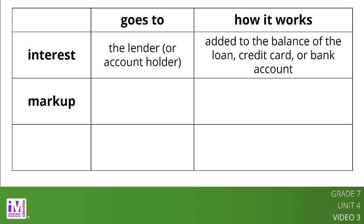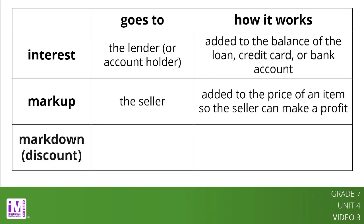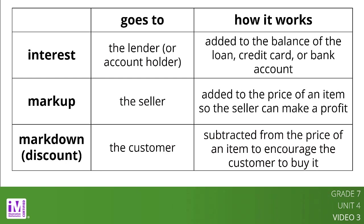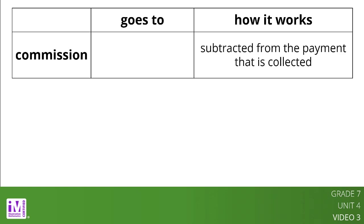A markup is when a percent of the total cost of an item is added to the price of an item so the seller can make a profit. A markdown is when a percent of the total cost of an item is subtracted from the price of an item to encourage the customer to buy it. A commission is when a percent of the total cost of an item is subtracted from the payment that is collected and given to the salesperson.